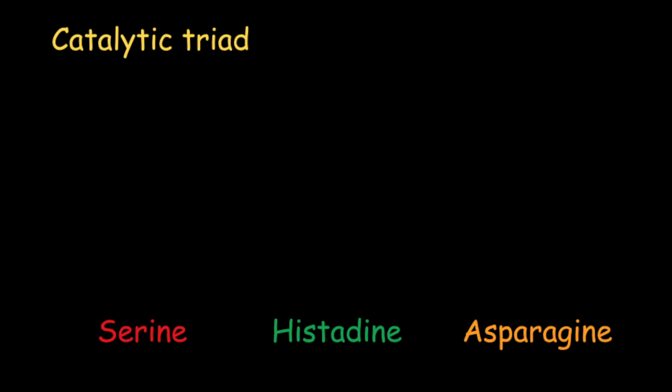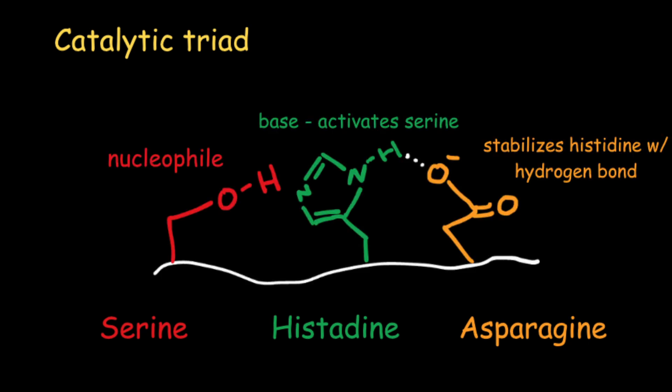These are the three amino acid residues that are in the active site of a serine protease, and sometimes this is called a catalytic triad because they all work together to help the enzyme perform the reaction. Usually in the catalytic triad, there's a nucleophile, a base, and then an acid that stabilizes.